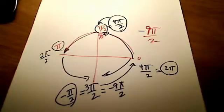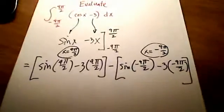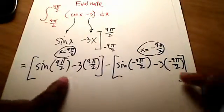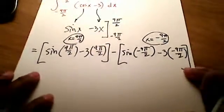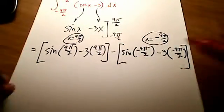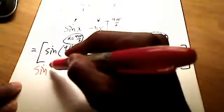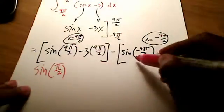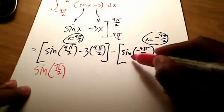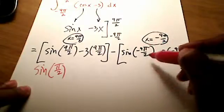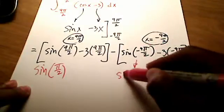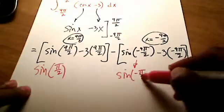if you want, you can rewrite these original values here. Instead of as sine of 9π over 2, you could write that as sine of π over 2. And instead of writing this one over here as sine negative 9π over 2, I could write this as sine of negative π over 2.